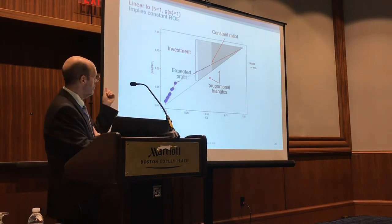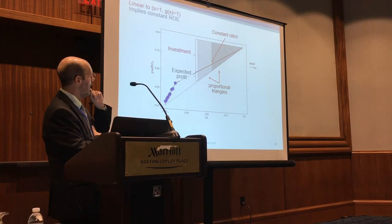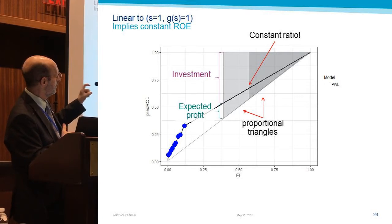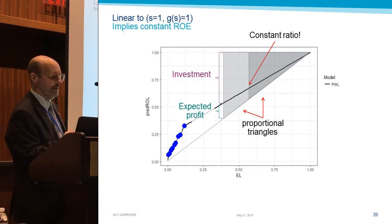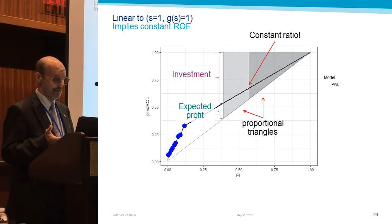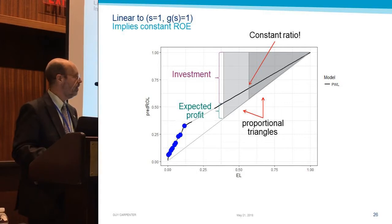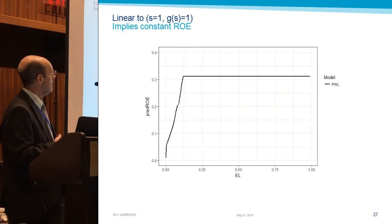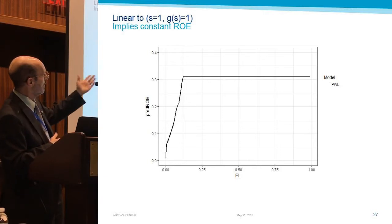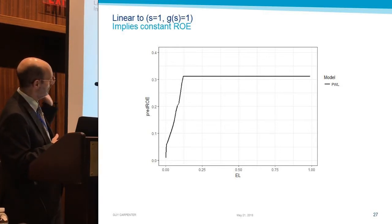So that straight line from the last blue dot, if you think about this, you've got some similar triangles. The relationship between the expected profit and the investment is constant along that whole range there. And that means it's a constant ratio, that means it's a constant return on equity. And lo and behold, you draw it and the ROE scale, there you go. As soon as we get to that straight shot, we're trucking along at a 31% ROE for most of the range.